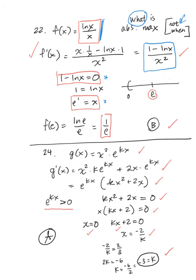In number 22, we're given the function ln of x over x, which is only defined for values greater than 0. I take the first derivative, simplify it, and set it equal to 0 to find the absolute maximum — I find x equals e. Testing this, the function goes from positive to negative, giving a relative extremum. Since the function is increasing to e then decreasing, I plug e into the original function and get 1 over e, or choice B, as the absolute maximum.